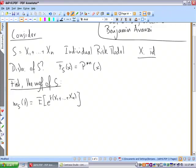Here we have the mgf of S by definition, but since the X's are independent, this is the product of the mgf of the X's. So we have m_X(t) to the power n.